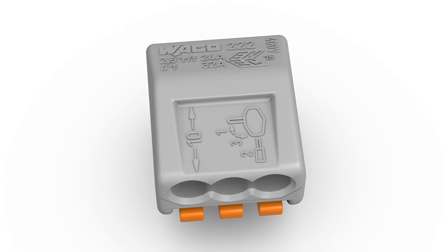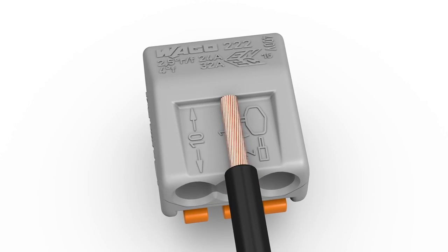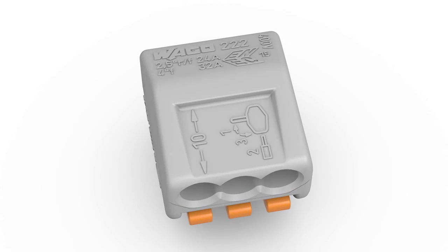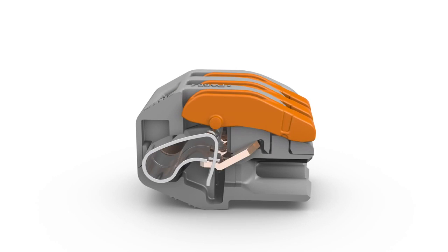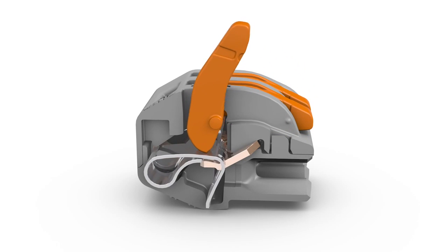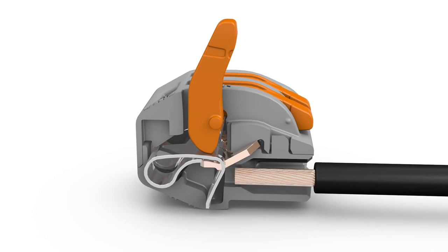Wiring is very easy. Strip the conductor to 9 to 10 millimeters or 0.37 inches, open the clamping unit via the integrated lever.